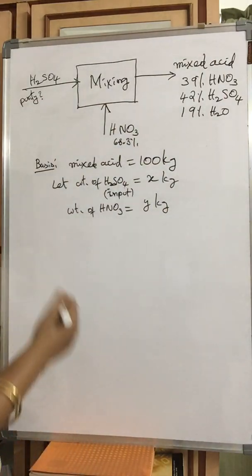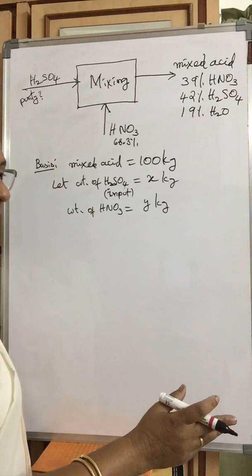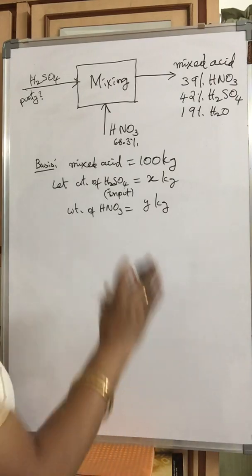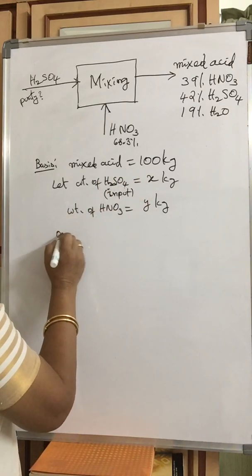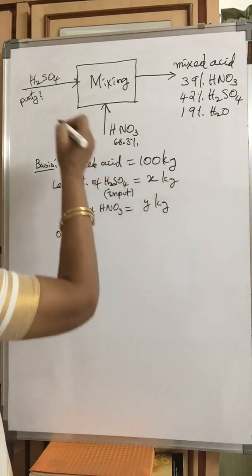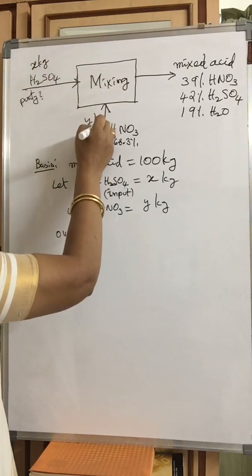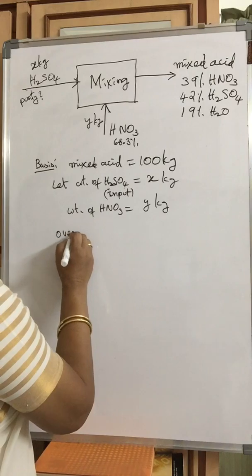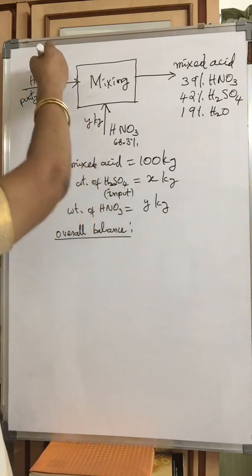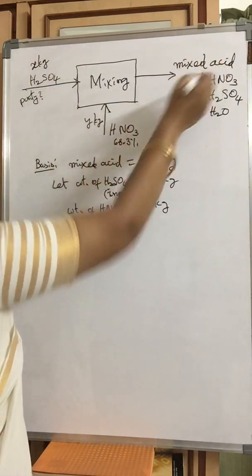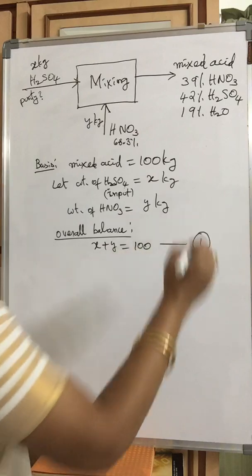We will write the material balance. We have already discussed in detail what material balance is, how to write it, overall balance, component balance — everything. So here, straight away, we write the steps. The overall balance: X kg of H₂SO₄ plus Y kg of HNO₃ gives 100 kg of mixed acid. Therefore: X + Y = 100 — let this be Equation 1.